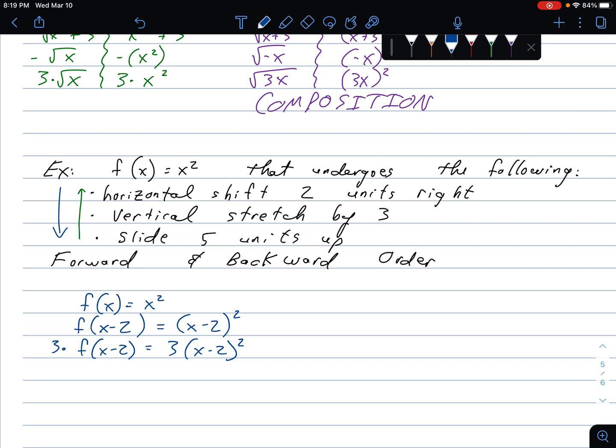Slide five units up. Up is a vertical change, meaning I'm going to have an external adjustment. I take my function, and now I'm adding five externally to the outside. And there's what I got.